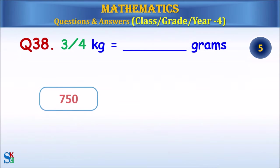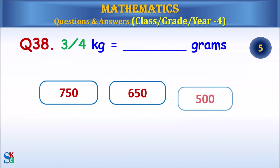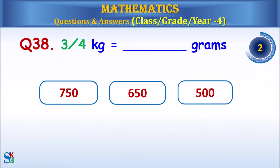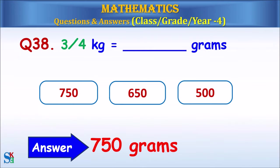Question 38: Three quarters of kg is equal to how many grams? The answer is 750 grams.